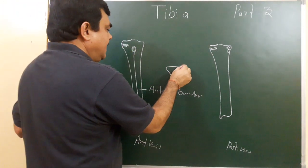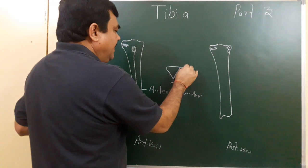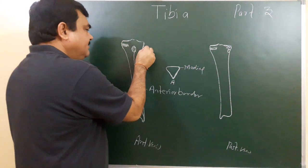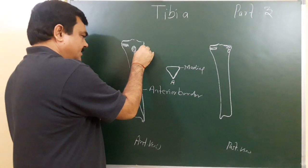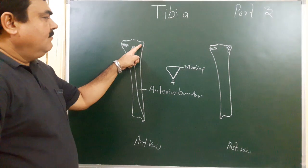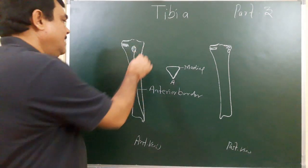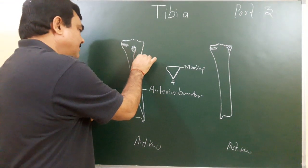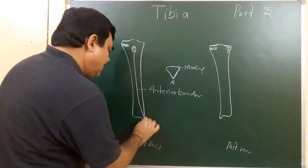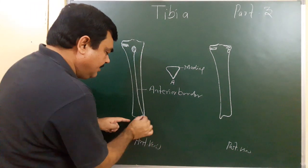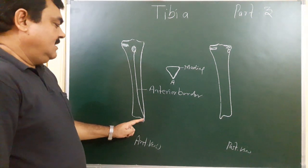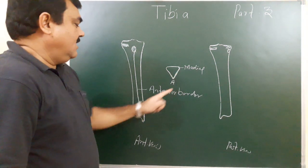Here is the medial border. This border is the medial border. It extends from the medial condyle of the tibia to the posterior border of the medial malleolus. So this is the medial border.